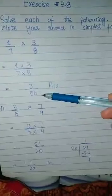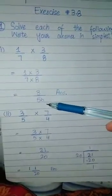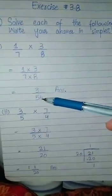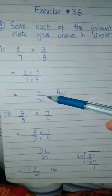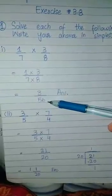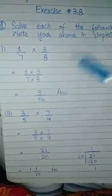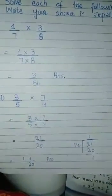Since 3 by 56 is a proper fraction where the numerator is smaller than the denominator, this is already in its simplest form. This is our answer for the first question. The next question is 3 by 5 multiplied by 7 by 4.